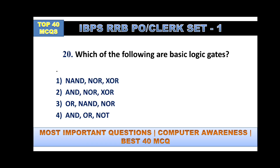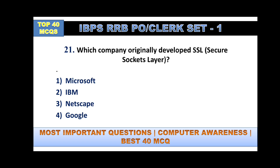Which of the following are basic logic gates? There are three basic logic gates: AND, OR, and NOT.